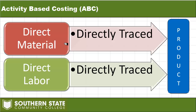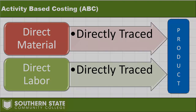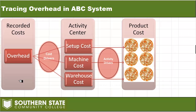ABC — activity-based costing — is kind of a solution to that. We still take direct material and direct labor and trace them directly to the product. The difference is how we handle overhead. Whereas in normal costing we lump overhead together, in ABC we actually divide overhead up into separate subgroups — think of them as activities. We take overhead and break it up into usually three, four, or five different activities, then allocate those to the product based on how much of each activity they consume.